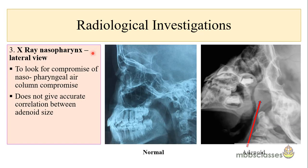We must also request an X-ray of the nasopharynx in lateral view to see the extent of the adenoid and how much the airway is compromised. On a normal X-ray, the nasopharyngeal air column is unobstructed. In an abnormal X-ray, the adenoid is significantly enlarged and causes significant obstruction of the nasopharyngeal air column. The disadvantage of X-ray nasopharynx is that it does not give accurate correlation of adenoid size, but it must be done for documentation purposes.